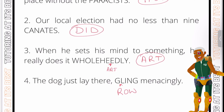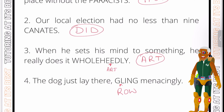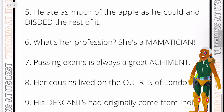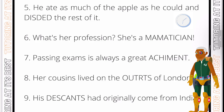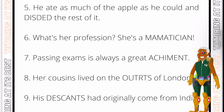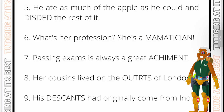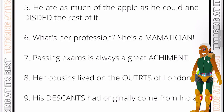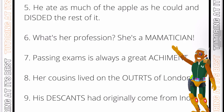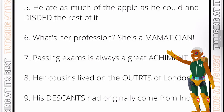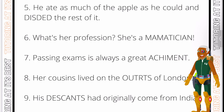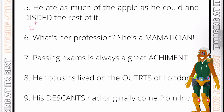Now let's hand it over to you — pause the video, attempt the question, then press play when you're ready. Question five: 'He ate as much of the apple as he could and DDED the rest of it.' He's eaten the apple and it looks as if he's thrown away or discarded the rest. To discard something means to throw it away or dispose of it. The three-letter word is C-A-R, going just after the S.